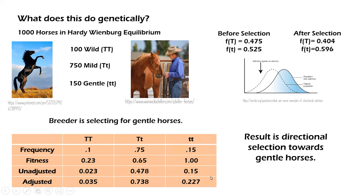Obviously, the rancher wants to breed for gentle horses, so the little t, little t genotype is most favored, with a fitness of 1.0. The wild horses only receive a fitness of 0.23.